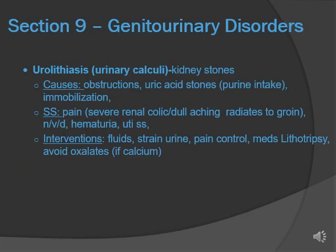Urinary calculi, or kidney stones. Causes include obstruction, uric acid stones from excessive purine intake, and immobilization. Signs and symptoms depend on location and size — if it's in the ureters, severe renal colic pain; if it's in the kidney, dull achy pain radiating to the groin. Other symptoms include nausea, vomiting, diarrhea, constipation, hematuria, and UTI signs. Interventions: increase fluids, strain all urine, pain control with opioids. For uric acid stones, give allopurinol. You can do lithotripsy, which crushes the stone through sound waves, and tell them to avoid oxalates if it's a calcium stone.